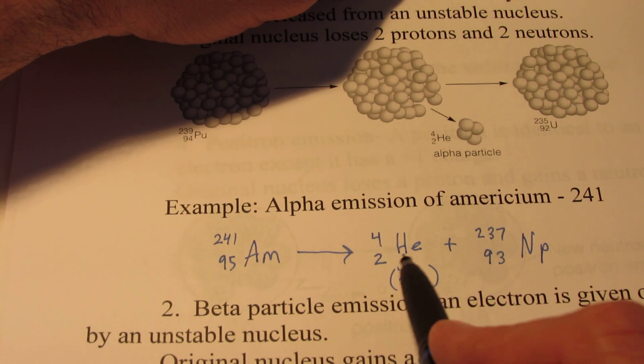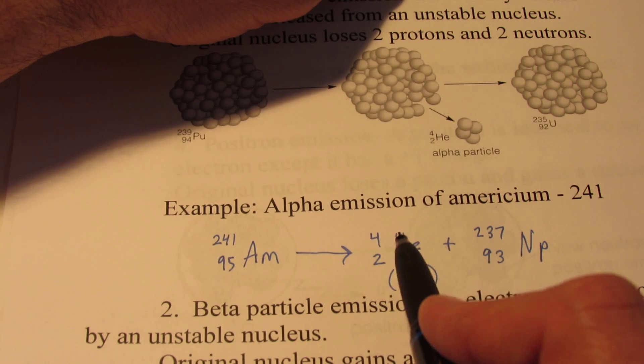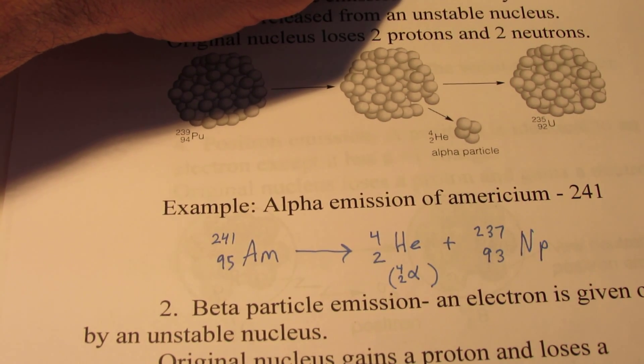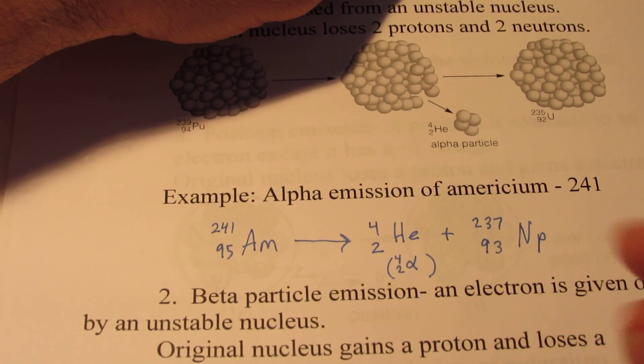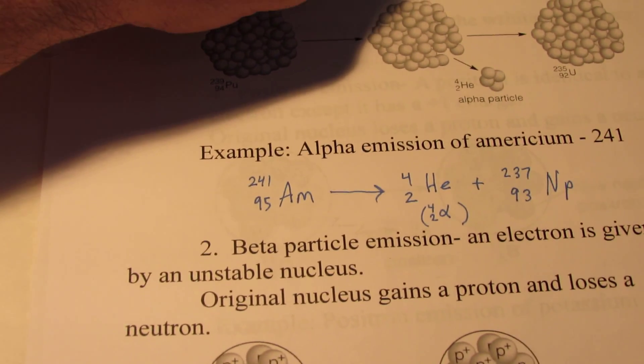Now you can see why these particles are so large and why their penetrating ability is so poor, because they have a mass of 4. They're much larger than what we end up with when beta and gamma emission occurs. In fact, let's talk about beta next.